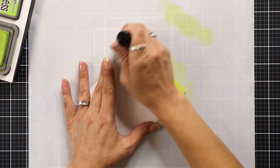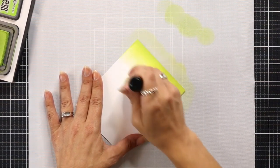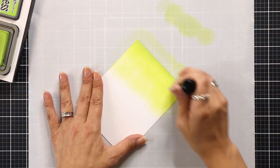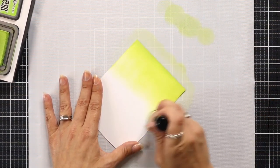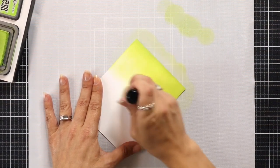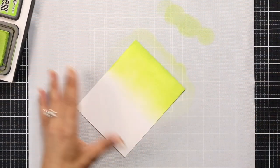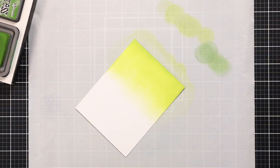I'm going to start off my card by first ink blending my panel. So I have a piece of Neenah Solar White cardstock, this is 80 pound, that I'm starting with Twisted Citron and I'm using a dome blending foam tool to do my ink blending. Starting on one side, I'm going to ink blend that Twisted Citron up to about the halfway point, getting lighter with my ink as I get towards the middle.